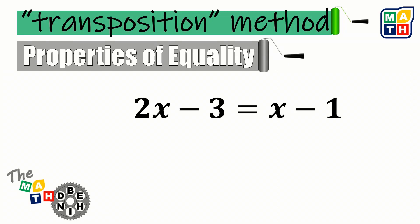In the same given example, the properties of equality allows us to add or subtract terms on both sides of the equation. Here, we are going to add 3 on both sides.